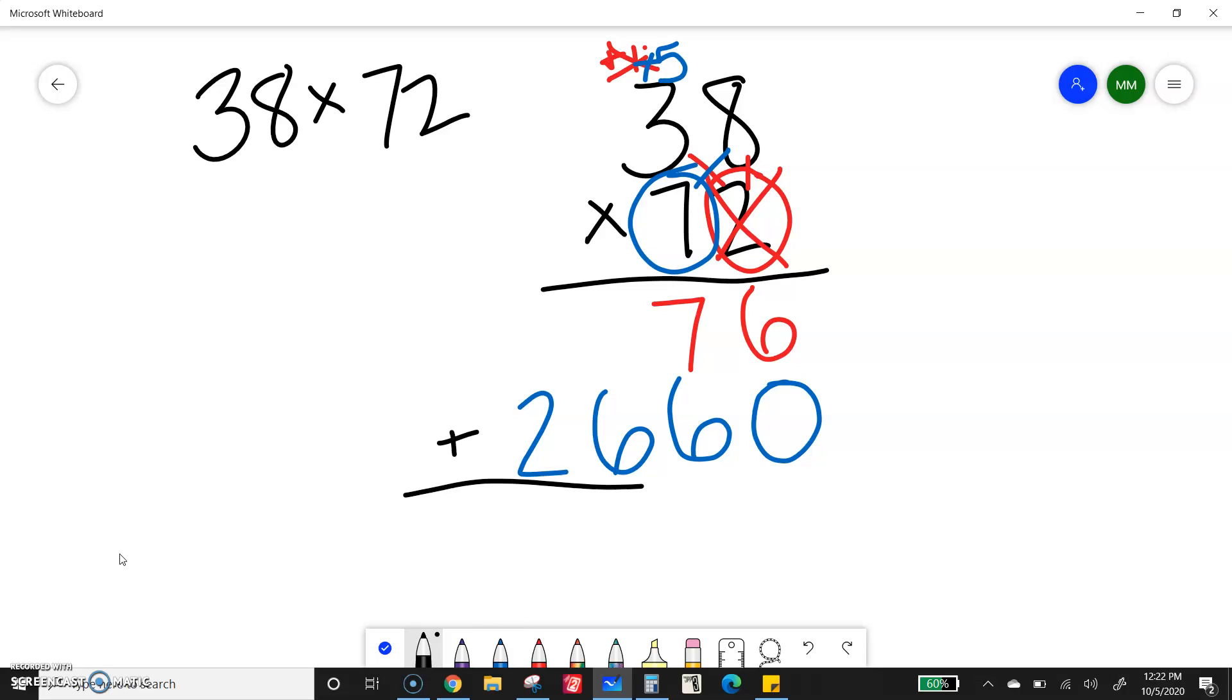Now I can add these together. I get 6. 7 plus 6 is 13. 6 plus 1 is 7. And then 2. 2,736.